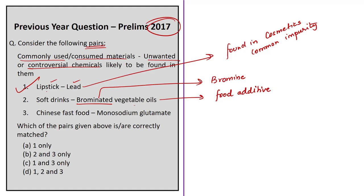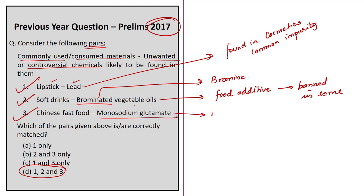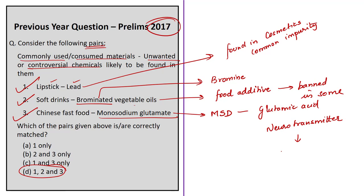Since both pairs 1 and 2 are correct, we can arrive at the final answer of option D — 1, 2, and 3 — as no other options have both 1 and 2. The third pair is Chinese fast food–monosodium glutamate (MSG): MSG was in use as a salt of glutamic acid, a non-essential amino acid. MSG is a neurotransmitter that transports messages from one nerve cell to another. It is said to enhance flavors, and some scientists believe it excites nerve endings — exhibiting neuro-excitatory properties. MSG is commonly used in Chinese fast food, so this pair is also correct.